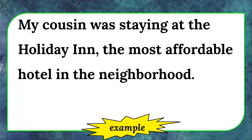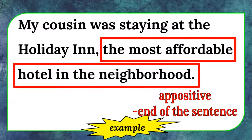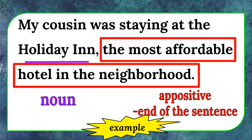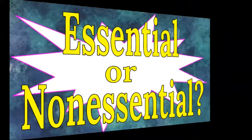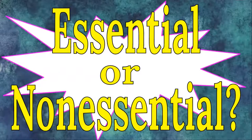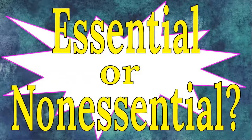My cousin was staying at the Holiday Inn, the most affordable hotel in the neighborhood. The appositive is "the most affordable hotel in the neighborhood." It is written at the end of the sentence. It refers to the noun Holiday Inn. An appositive may be essential or non-essential. What's the difference? Let's find out.